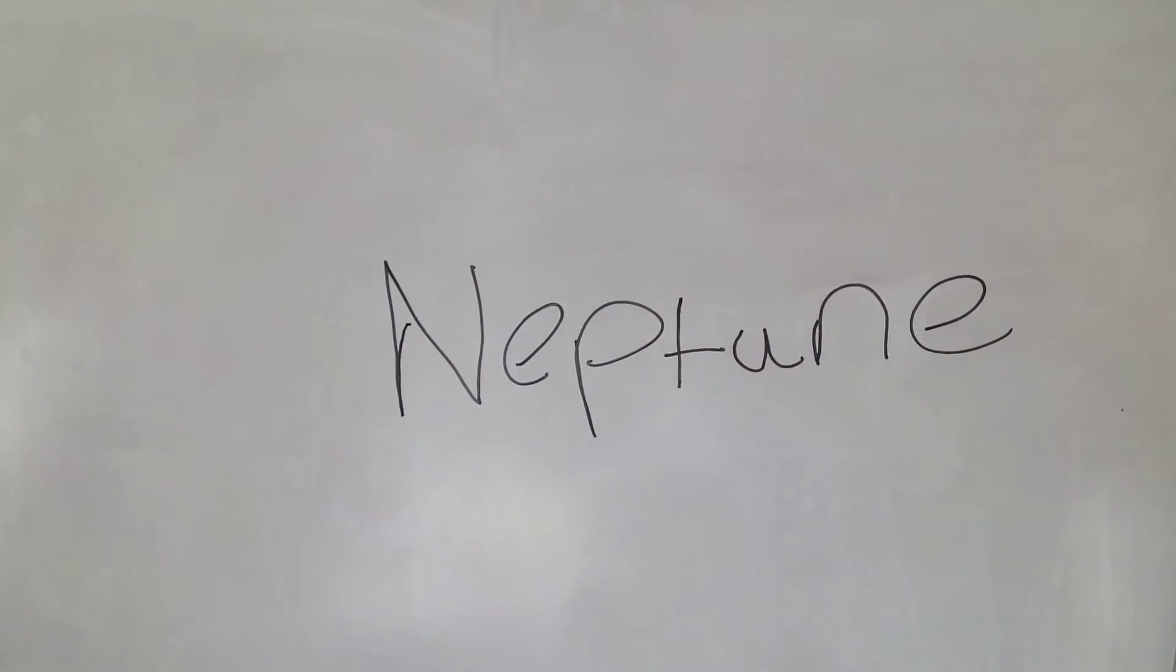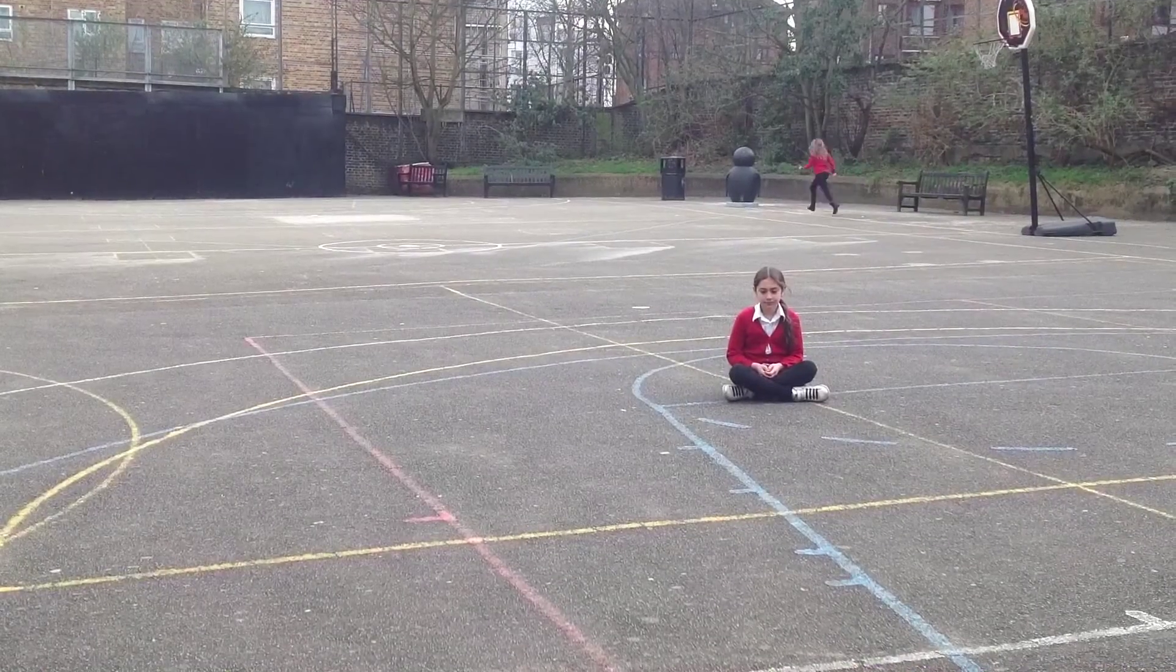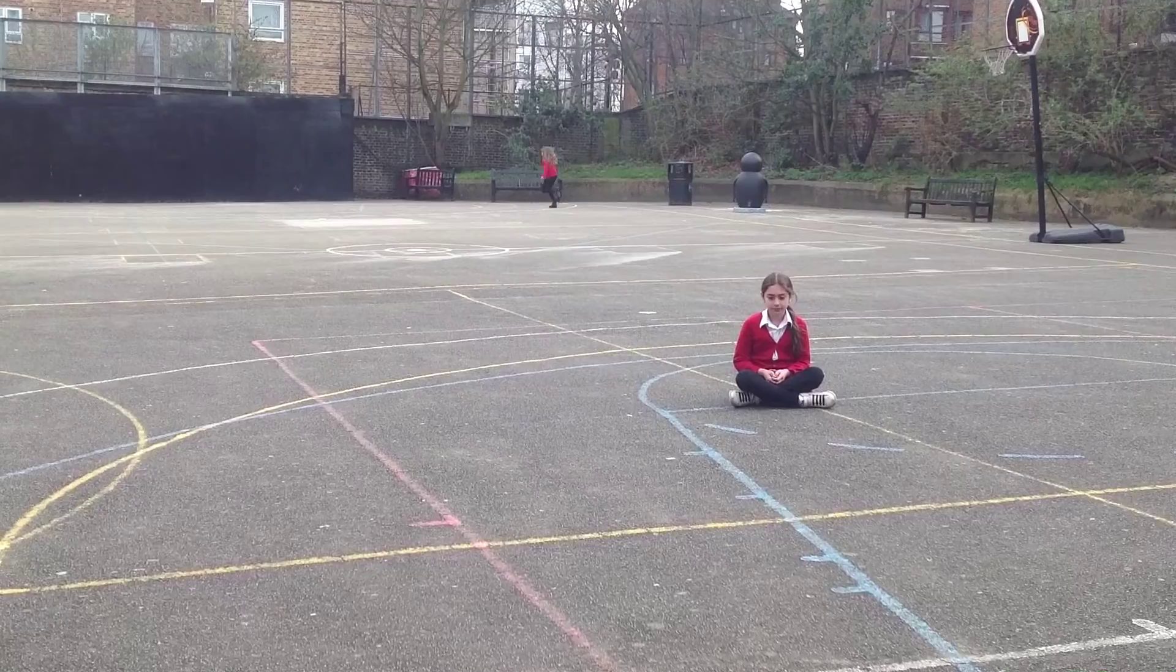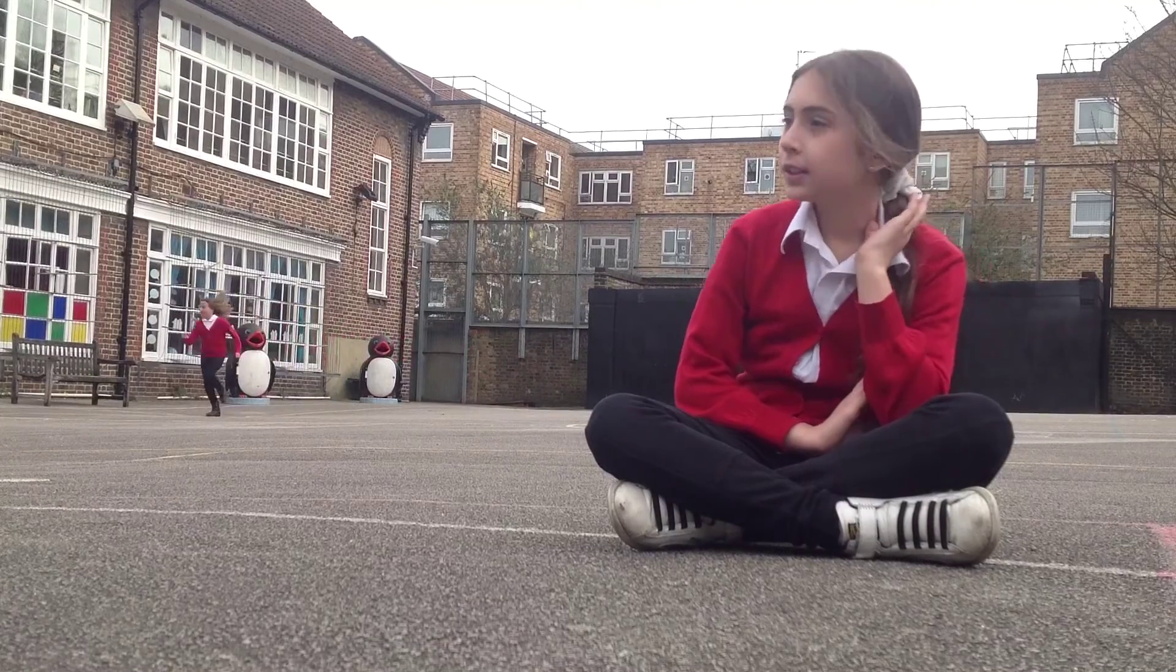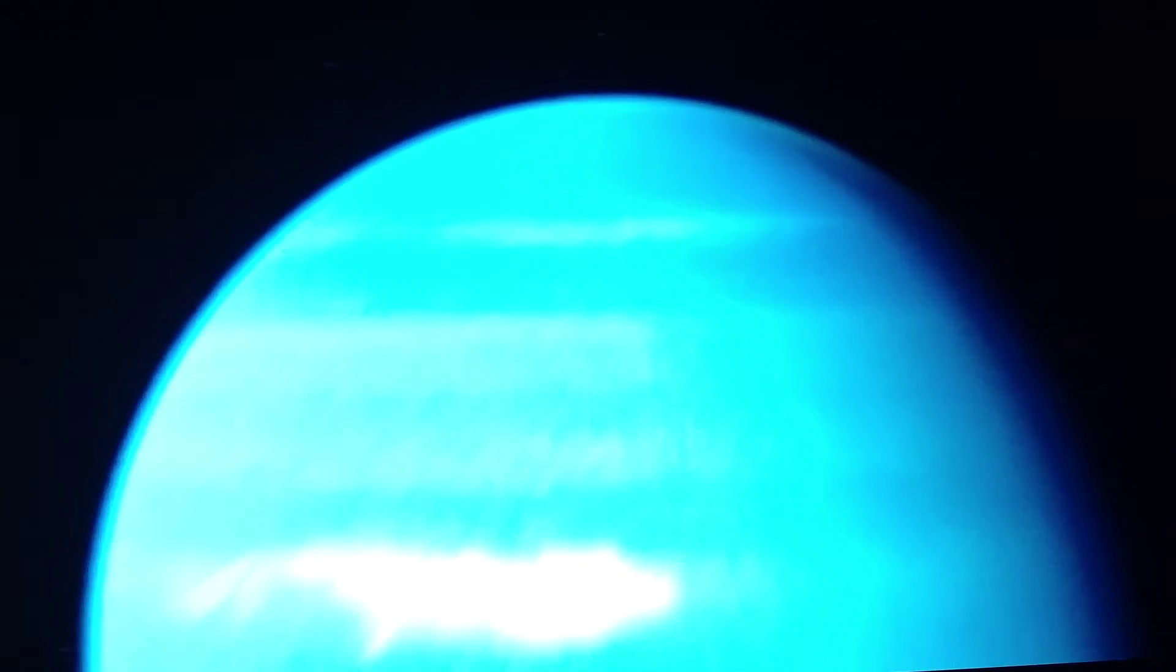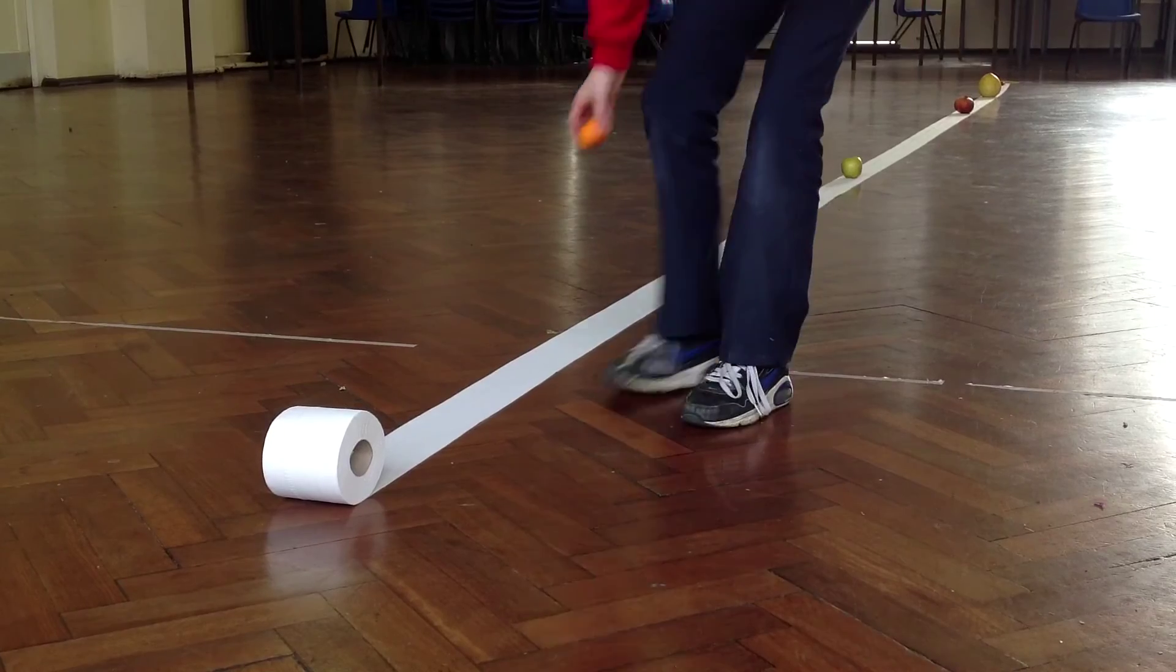Neptune! It's the smallest gas giant. It has only completed one orbit since it was discovered. Methane gets hot inside the planet and is crushed in the pressure of the atmosphere. There might be rain on Neptune made of solid diamonds.